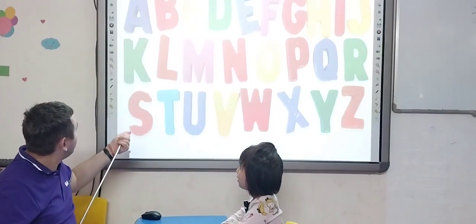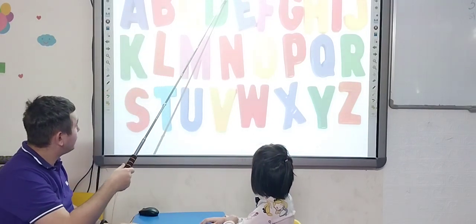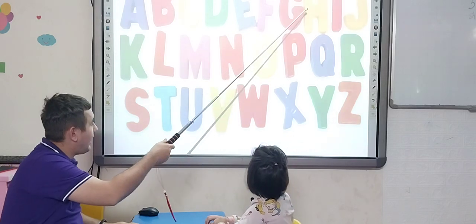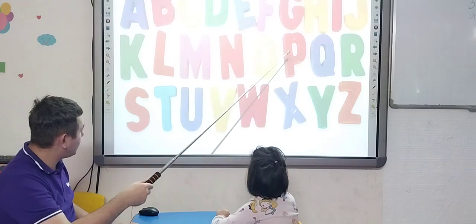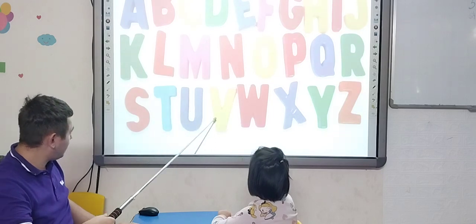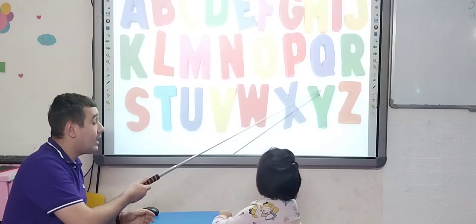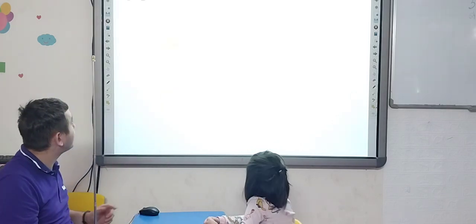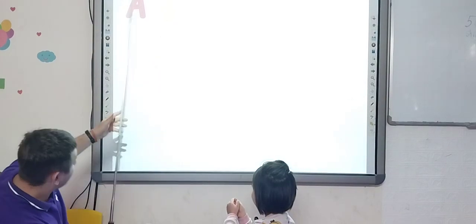We'll start with the ABC song. Okay, one, two, three, go! [singing] Very nice. Now we're going to talk about letters separately. Tell me please, what letter is this? Look here.